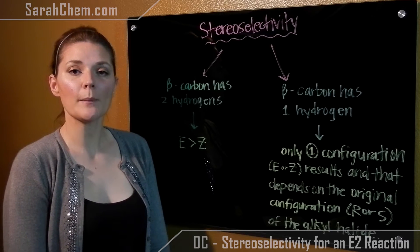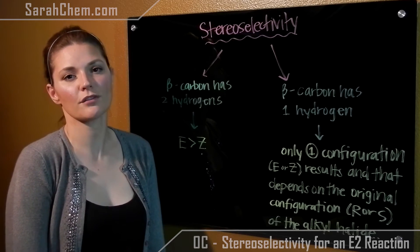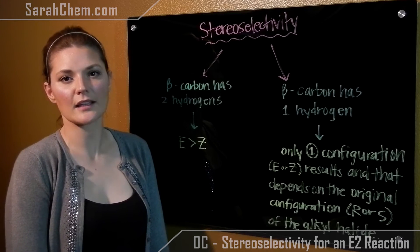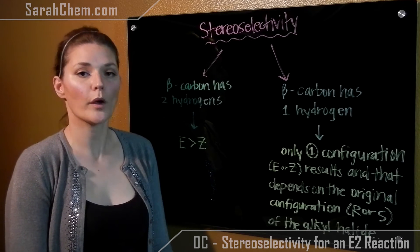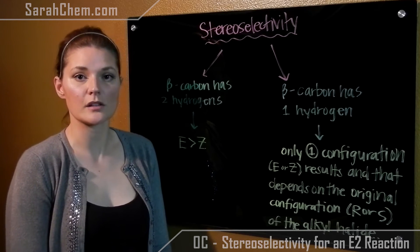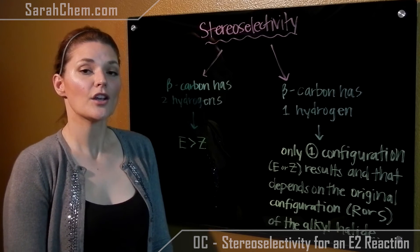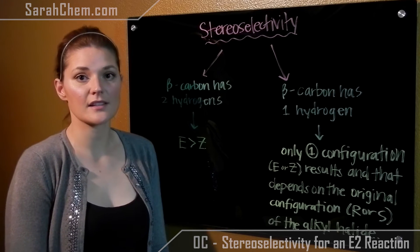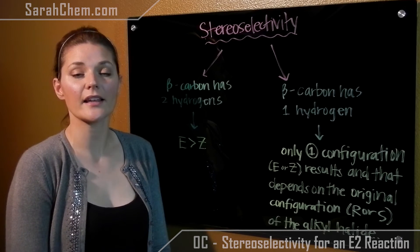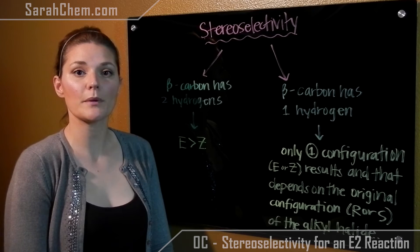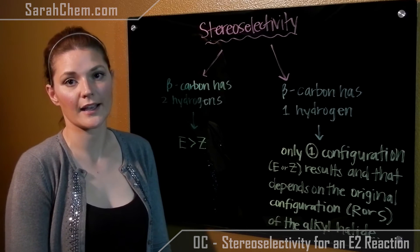Remember, we're going to be looking at that beta carbon most of all when we're looking at E2 reactions, trying to figure out which beta carbon is losing the hydrogen. Once you've established that, you then need to look at the stereoselectivity and decide if you have the potential to form an E or a Z isomer.